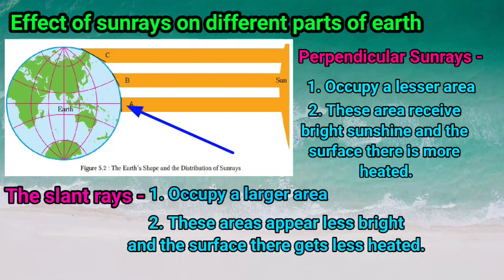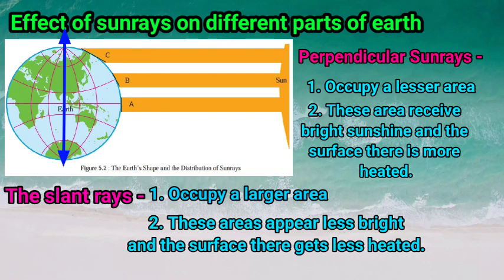Near the equator, Sun rays are perpendicular, so they occupy a lesser area. This area receives bright sunshine and the surface is more heated. As we move further away from the equator towards the north and south poles, Sun rays become slanted, occupy a larger area, such areas appear less bright, and the surface gets less heated. This is the effect of Sun rays on the different parts of the Earth.